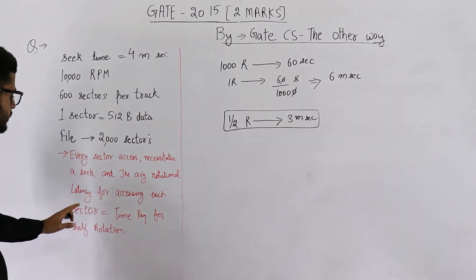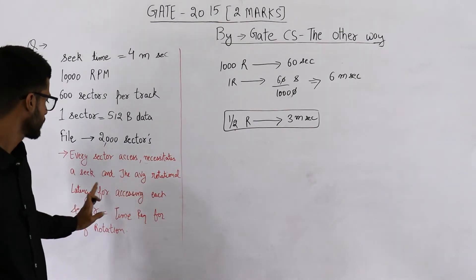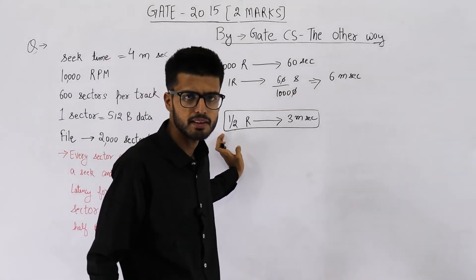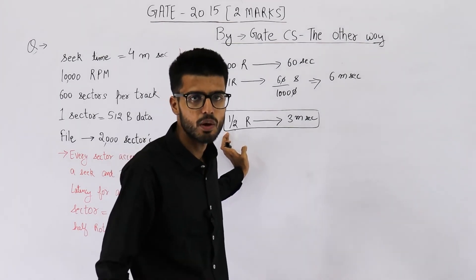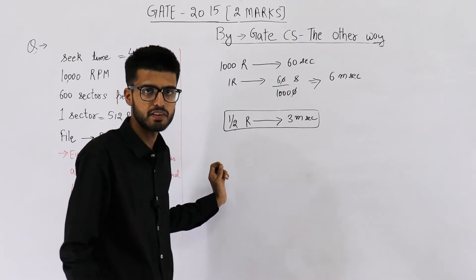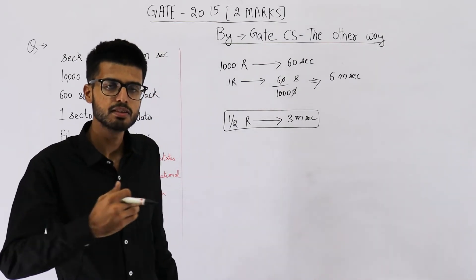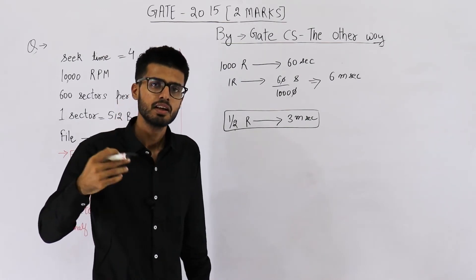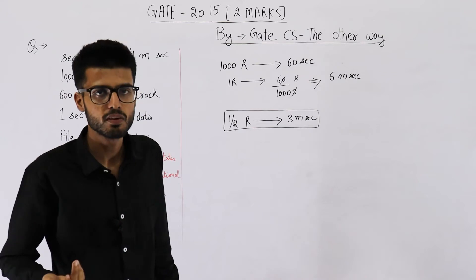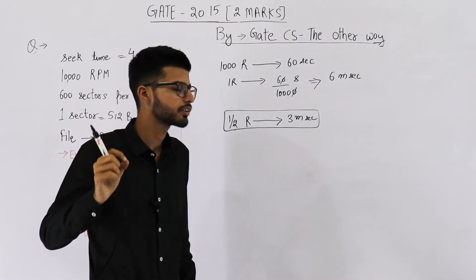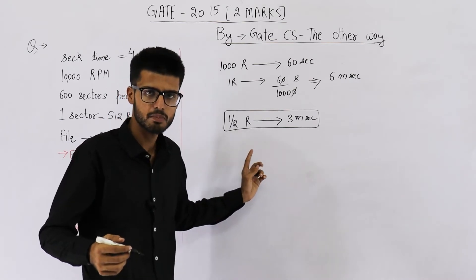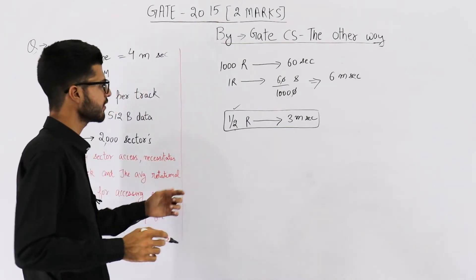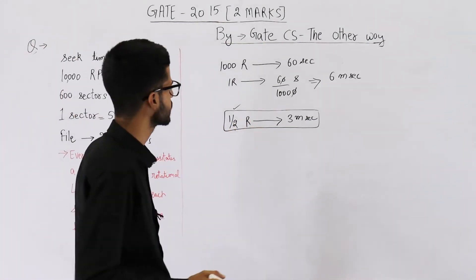They are defining in the question that average rotational latency for accessing each sector is time required for half rotation. Anyways, that's a well known fact. You just take the average case. In some cases, you need to rotate the entire platter once, that's one extreme case. And at times, you don't need any rotational delay, that means zero rotation. So average case will be 0 rotation plus 1 rotation divided by 2, that is half rotation. On average, we require 3 milliseconds for rotational delay.